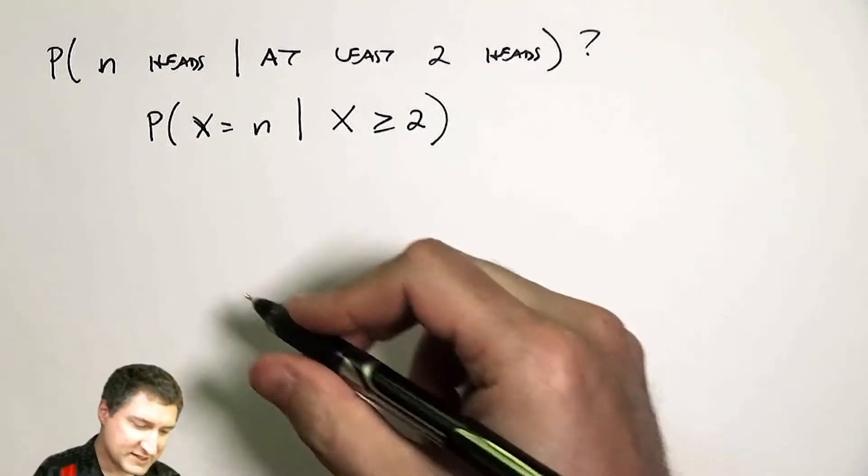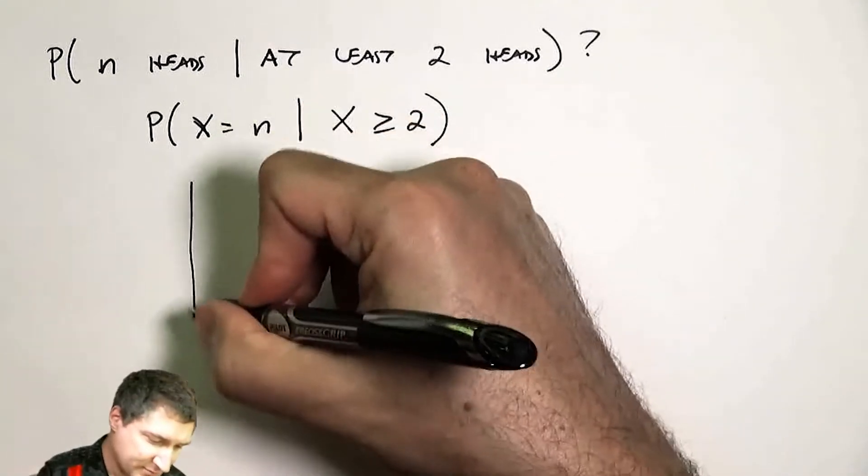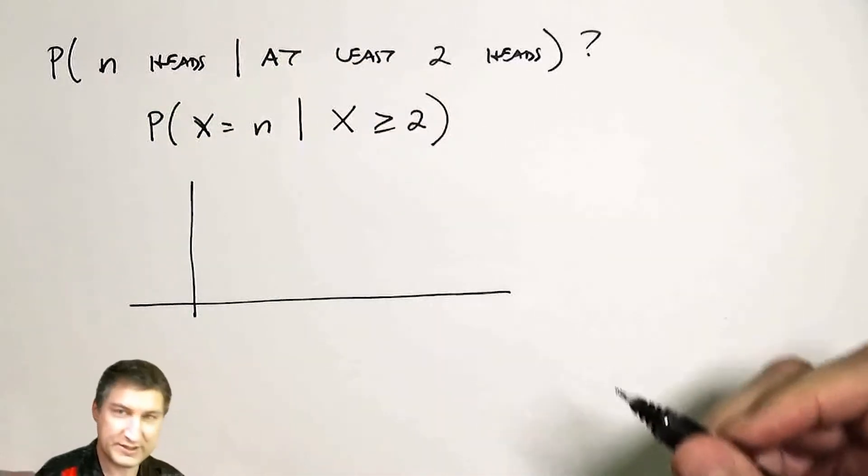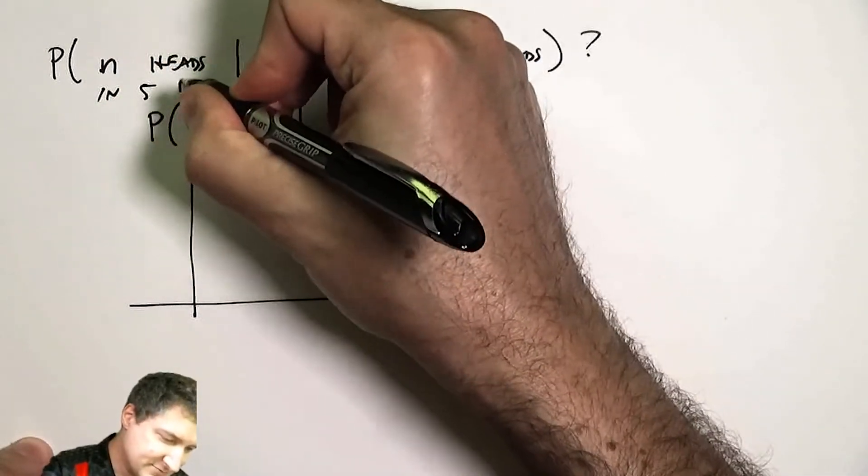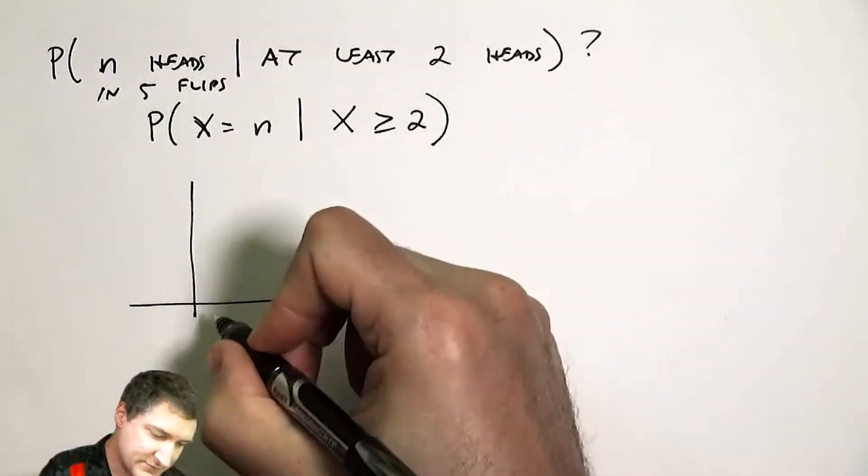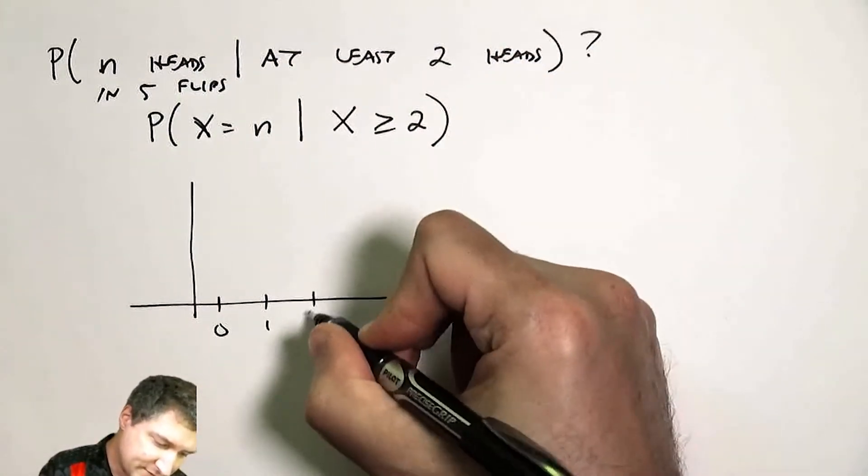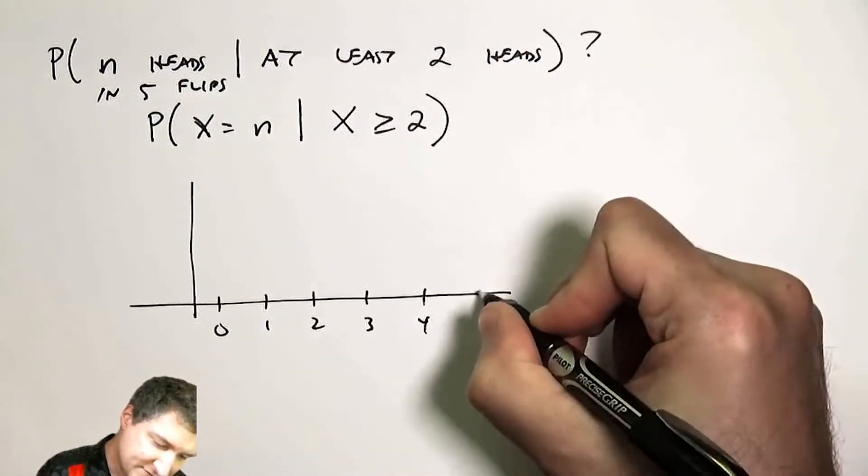Well, let's think about the normal PMF, this probability of getting n heads in five flips, for example, to make this more concrete. So if I have five flips, I could have up to five heads.